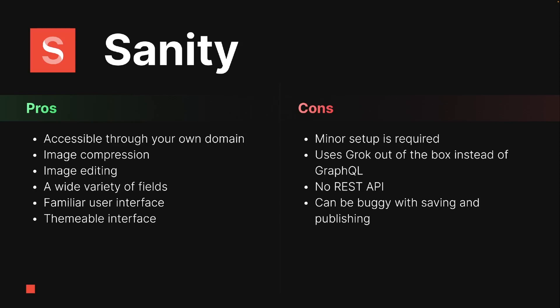Sanity also offers a familiar user interface like Contentful, but one thing it adds that Contentful doesn't have is the ability to customize the interface, which is great. There is still no database customization, but since it's hosted on your end it doesn't matter as much. For cons, there is a minor setup required — it's kind of in between Strapi and Contentful in that regard. It also uses GROQ out of the box instead of GraphQL, so you need to switch to GraphQL functionality if you want to use it.